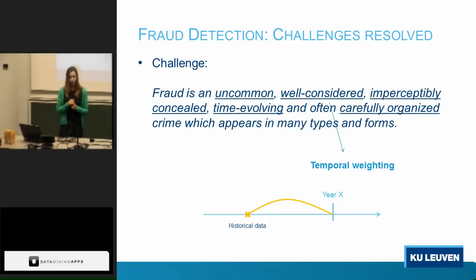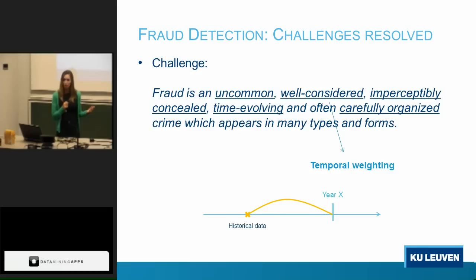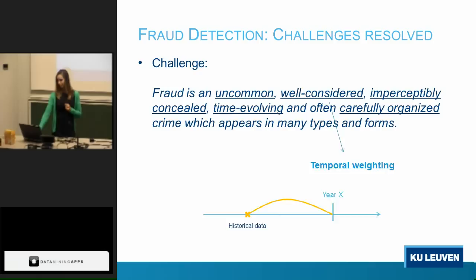The second characteristic is that fraud is well-considered. Fraud is not something fraudsters decide to do overnight — there is a whole process before they actually commit fraud. Information of one year ago or five years ago is not equally important. The more recent the data is, the more important it is. So we should assign a higher weight to more recent data. That's why we use the concept of temporal weighting.